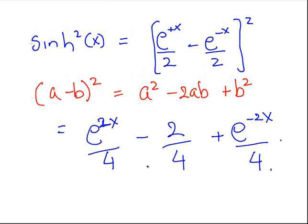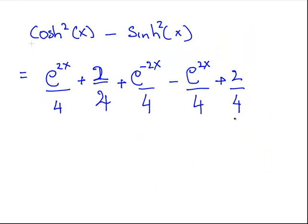Essentially, all we're doing here is changing the signs. So that's going to be minus, that's going to be plus, and this one's going to be minus as well. Minus e to the minus 2x over 4.